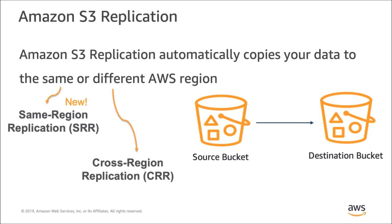S3 Replication is an automatic and asynchronous process that makes an identical copy of your object. That means it retains all metadata that is on the source object, including important fields such as the object creation date and time, and the version IDs. S3 Replication has always worked across AWS regions, and customers have asked us to extend that capability so that they can replicate in the same AWS region. We've recently announced exactly that, and now you have the choice of a destination bucket in the same region as the source. Let's take a closer look at the capabilities of S3 Replication.